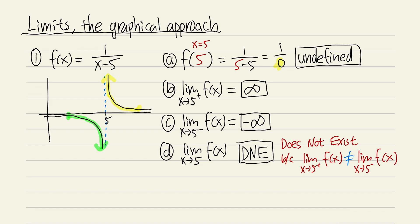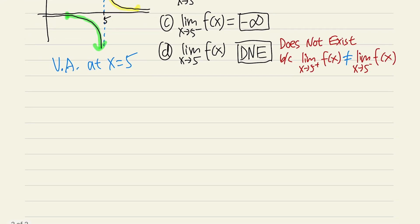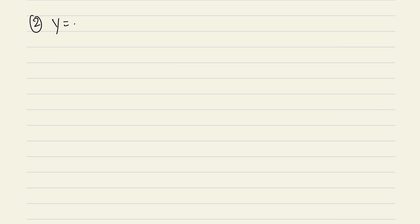Here we have a vertical asymptote at x = 5. This is the first case where a function is discontinuous. There are three cases of discontinuity you should know; the vertical asymptote is the first one.